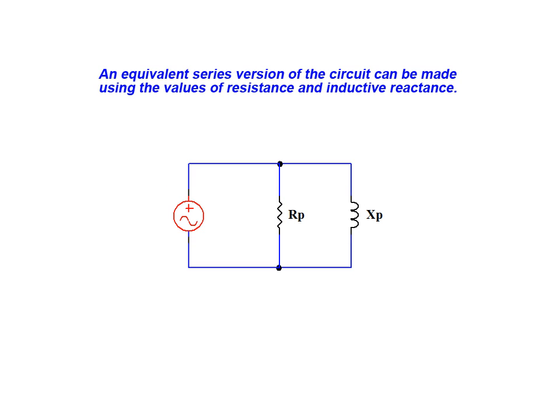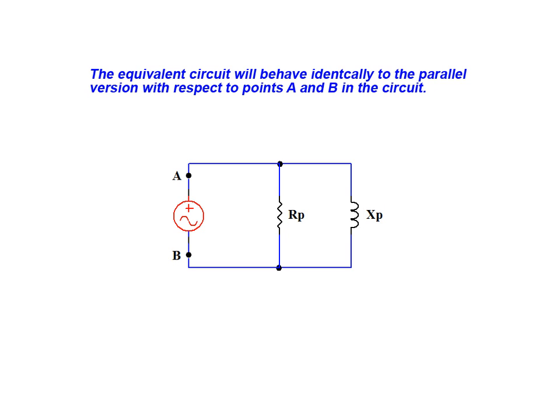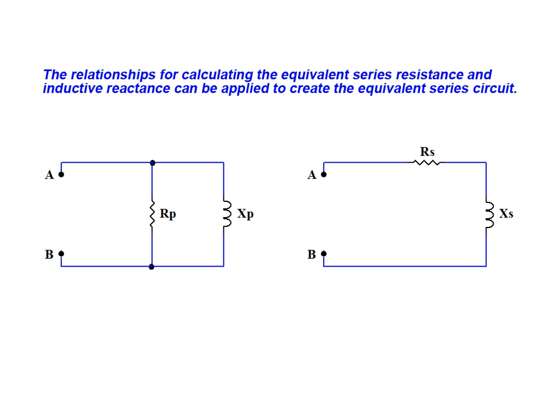An equivalent series version of this circuit can be made using the values of resistance and inductive reactance. The equivalent series circuit will behave identically to this parallel version with respect to points A and B. The relationships for calculating the equivalent series resistance and inductive reactance can be applied to create an equivalent series version of the circuit.